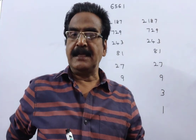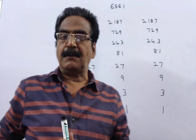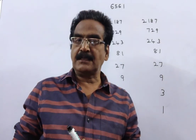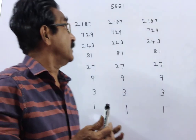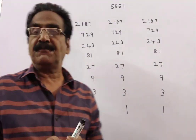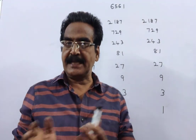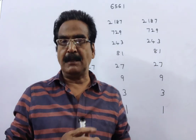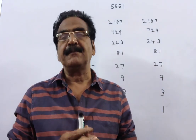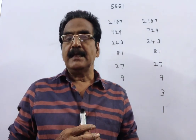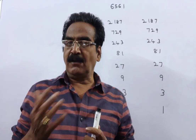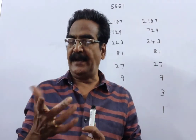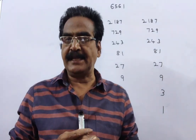Hi friends, good morning. Please look at the next problem. Friends, the problem is given in the description box. There are 6561 balls of equal weight except one ball which is heavier. The question is: what is the maximum number of weighings to find the heavier ball?